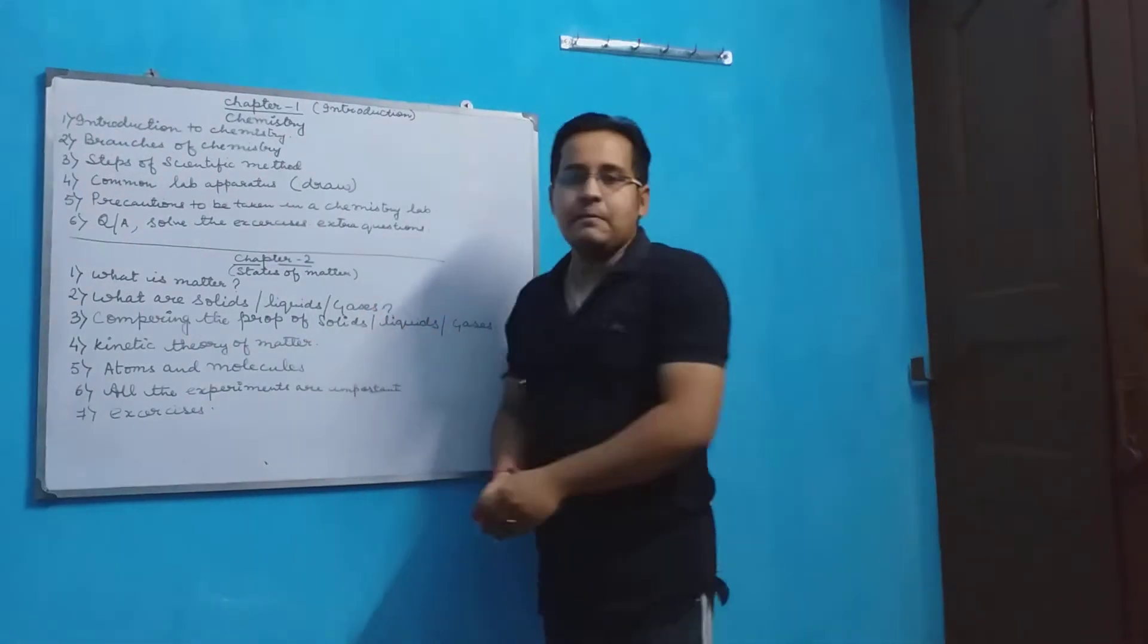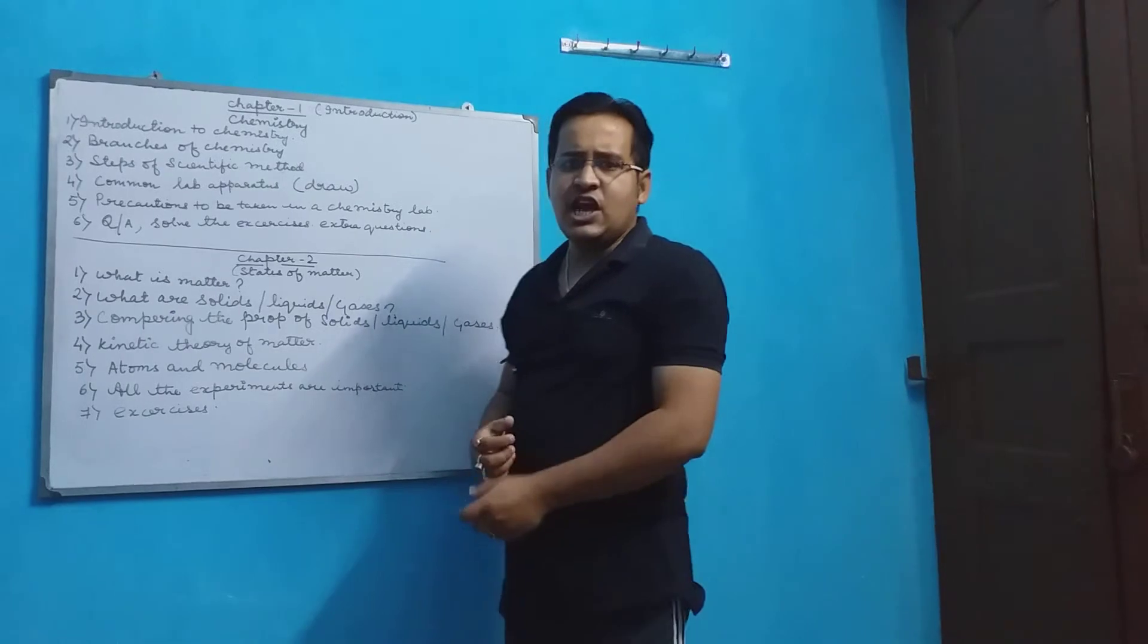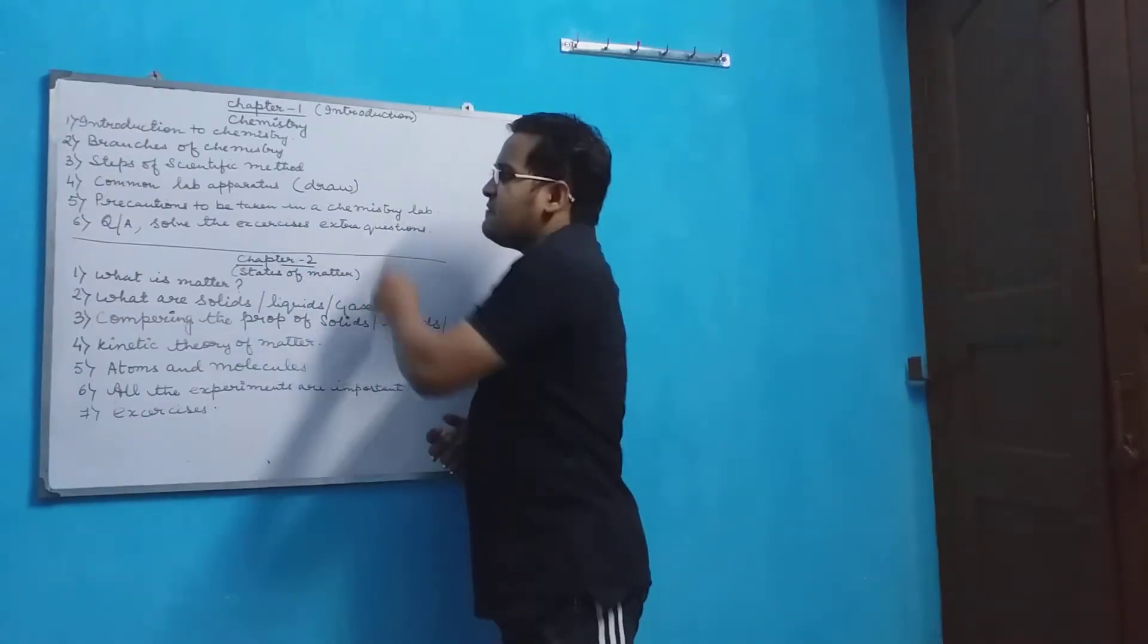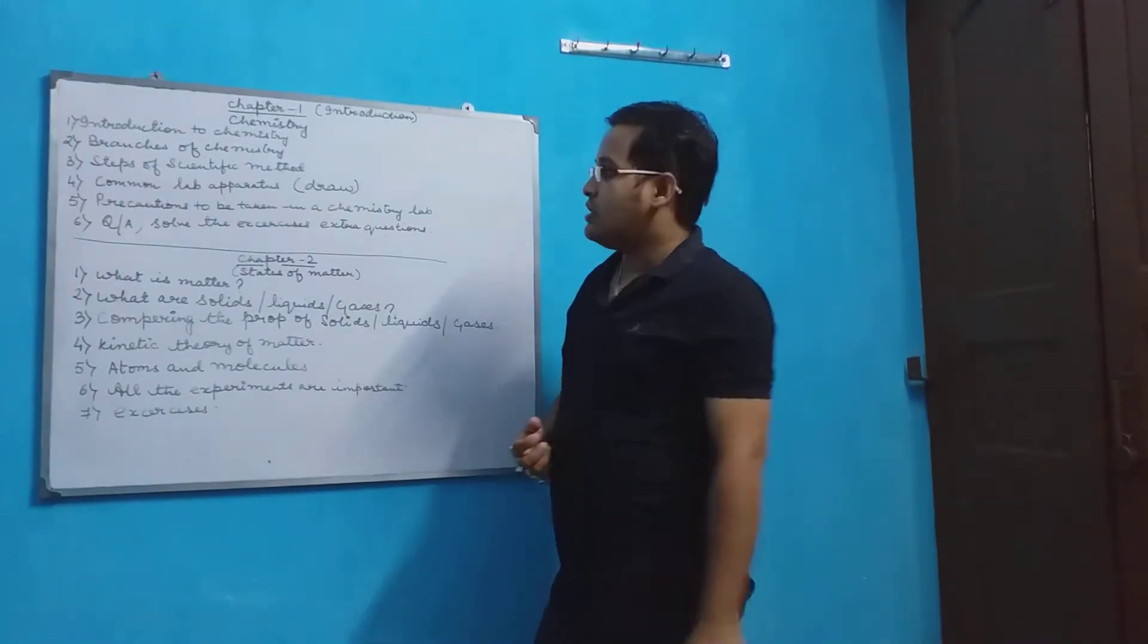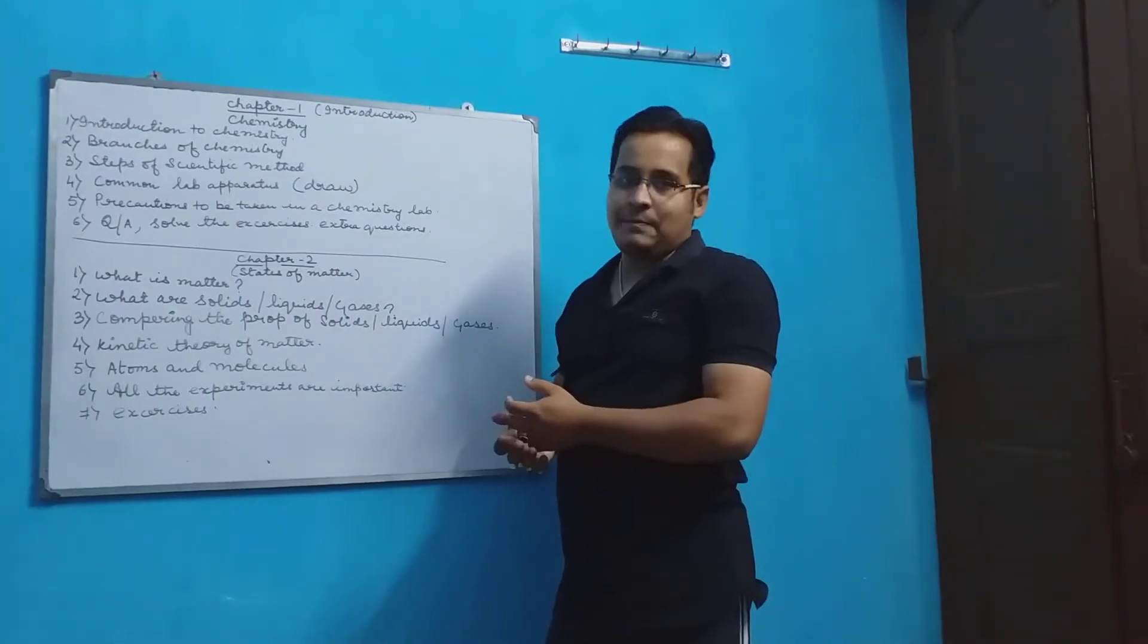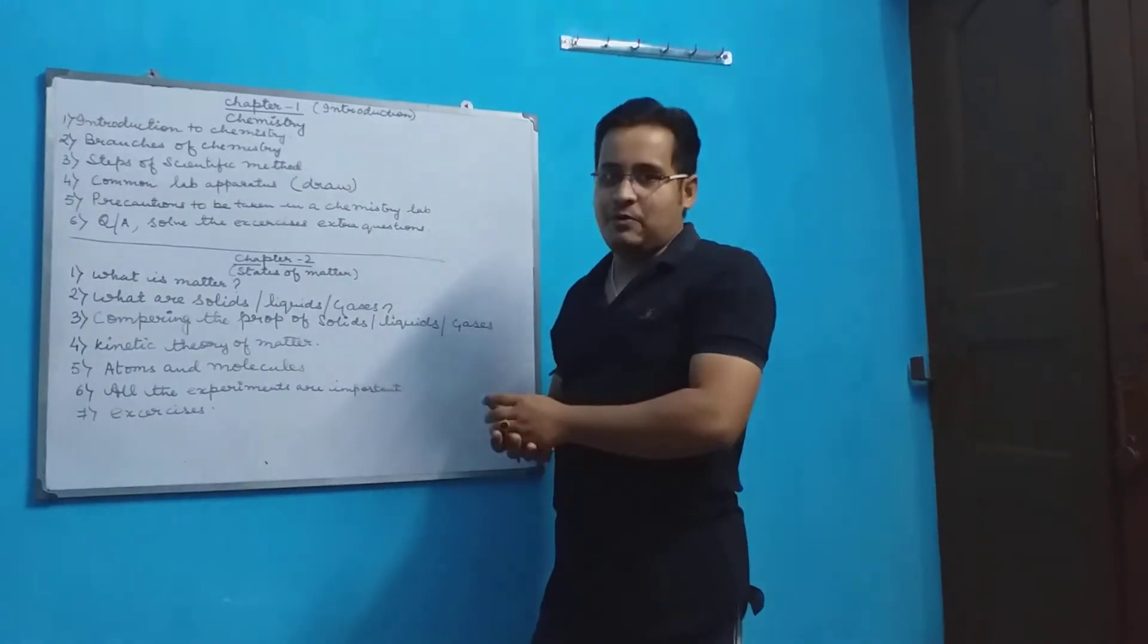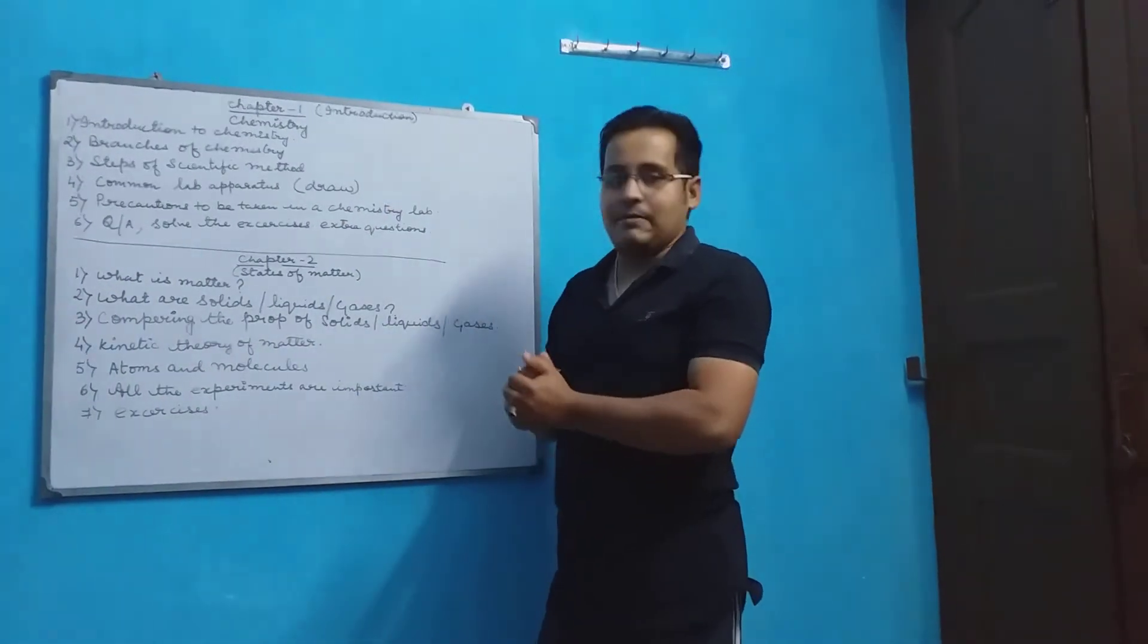All these are very important steps. Hypothesis, developing a theory, the observations all are very important. The fourth point that we have is the common lab apparatus. These apparatus are of utmost importance in a chemistry lab.